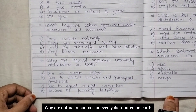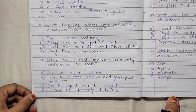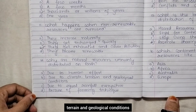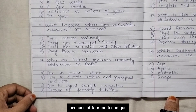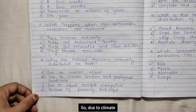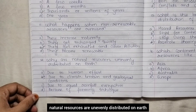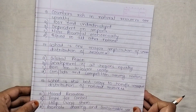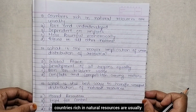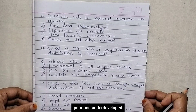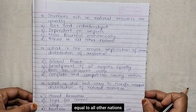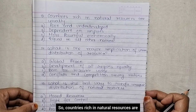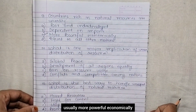Why are natural resources unevenly distributed on earth? Options are due to human effort, due to climate, terrain and geological conditions, due to equal rainfall everywhere, because of farming technique. Due to climate, terrain and geological conditions, natural resources are unevenly distributed on earth. Countries rich in natural resources are usually: poor and underdeveloped, dependent on imports, more powerful economically, or equal to all other nations. Countries rich in natural resources are usually more powerful economically.